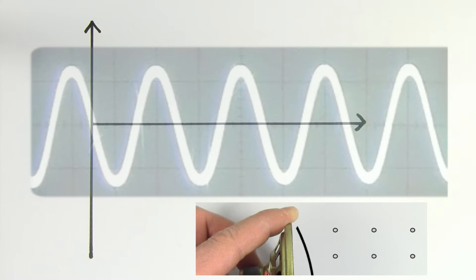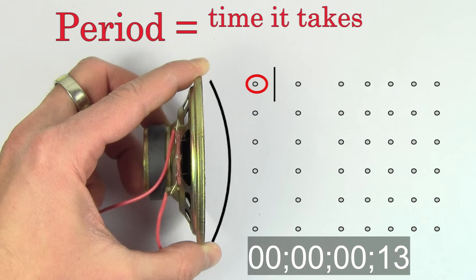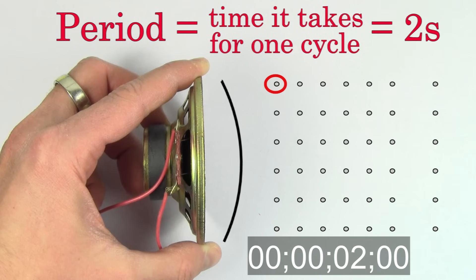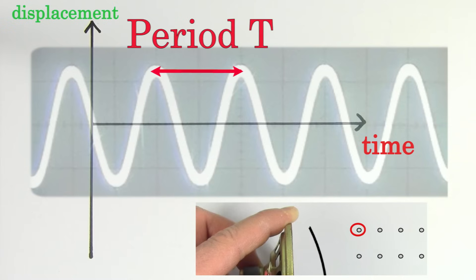Another key idea is the period of a sound wave. The period is defined to be the time it takes for an air molecule to fully move back and forth one time. We call this back and forth motion a cycle. We measure the period in seconds, so the period is the number of seconds it takes for one cycle. We use the letter capital T to represent the period.